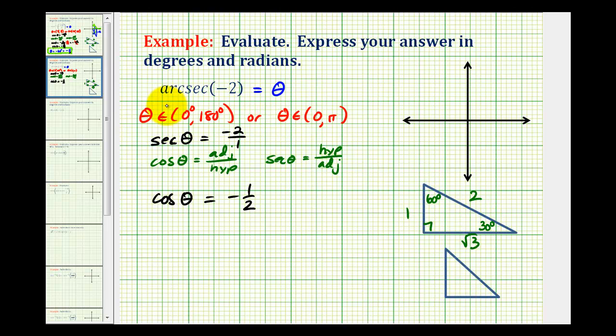So now if I go back and take a look at the output of the arc secant function, we know the initial side must be along the positive x-axis, and if the angle is in this interval, it must terminate somewhere from here to here. And since the cosine function value is negative, we know we must be in the second quadrant.